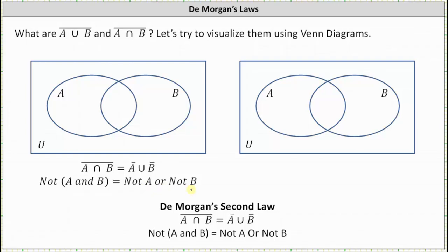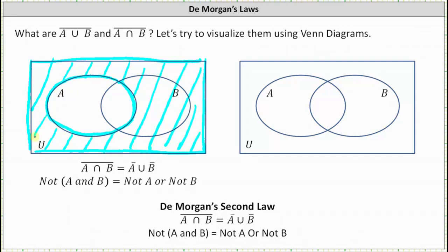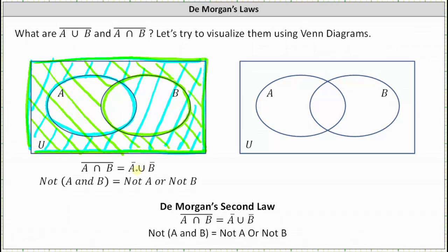Let's go ahead and show this using the Venn diagrams. Once again, let's graph A complement, then B complement, and then determine the union from the Venn diagram. A complement is the region outside A, which is this region. And now let's graph B complement, which would be the region outside B, which is this light green region. But this time we're looking for A complement union B complement, meaning not A or not B, which would be the region shaded once or twice — all the region except the intersection of A and B. So this shows that A complement union B complement is equal to the complement of the intersection of A and B, which is this region here.